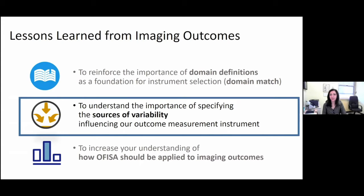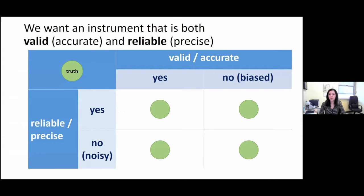The second lesson is related to understanding the importance of specifying the sources of variability influencing our outcome measurement instruments. When we choose an outcome instrument, we want these instruments to be both valid and reliable. The best instrument is one that is both valid and precise — that is, it measures what it is meant to measure in a truly reliable way.